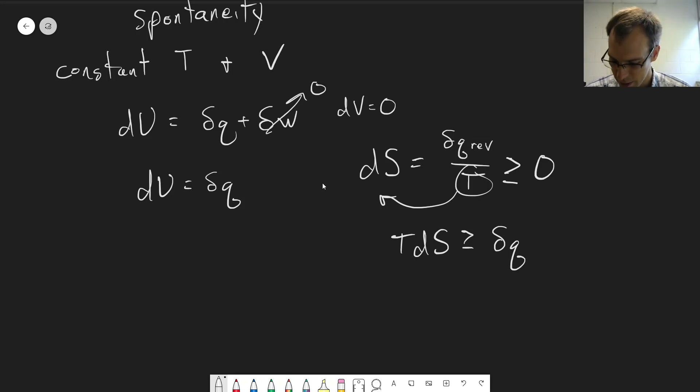So if the equal sign is for if it's reversible, the greater than sign is for if it's an irreversible process.